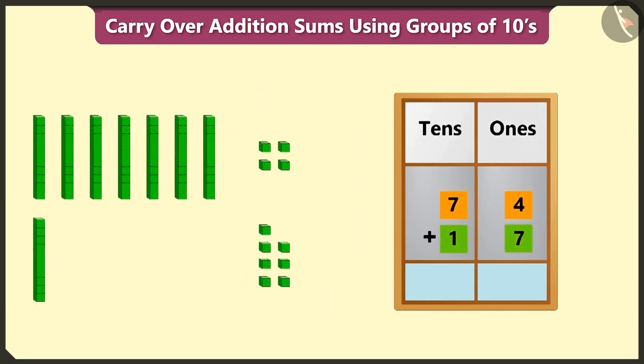Yes, after writing both the numbers in this way, in the ones tens boxes, adding four and seven in ones box makes eleven.